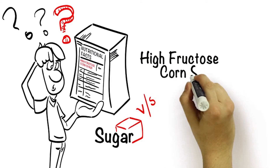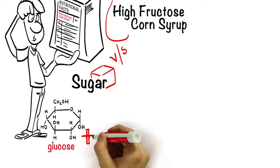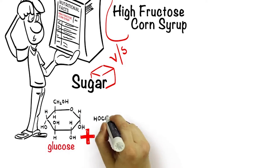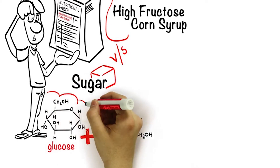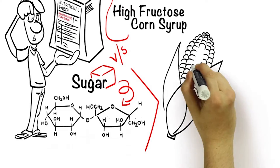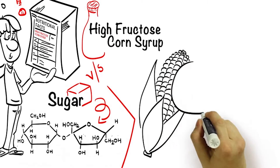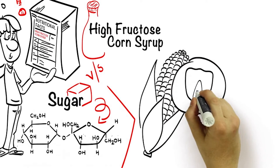Table sugar — sucrose — is glucose plus fructose added together. So you put those two monosaccharides together and you make table sugar.